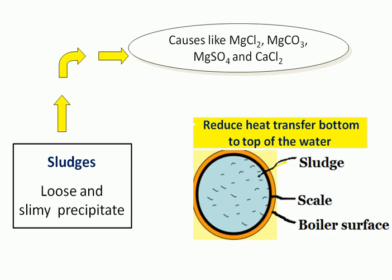The sludge acts as a thermal insulator. As seen in the picture, the boiler surface has scale on the inner walls, and sludge as a loose precipitate at the bottom. This loosely precipitated sludge minimizes heat transfer from the bottom to the top of the water. The heat at the bottom of the water may reach almost 100%, but the top of the water is not heated fully because the sludge acts as a thermal insulator — a poor conductor — reducing heat transfer from bottom to top.